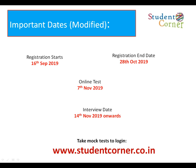Hello, welcome to Student Corner. Today we'll discuss the topic called Time and Work. Using the unitary method: if A can finish a piece of work in 60 days, then in one day A can do 1/60th part of the work.